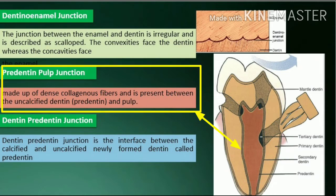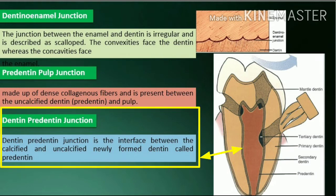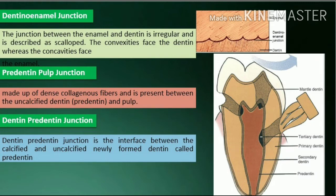Predentin-pulp junction is made up of dense collagenous fibers and is present between the uncalcified dentin (predentin) and pulp. The dentin-predentin junction is the interface between the calcified and uncalcified newly formed dentin called predentin.